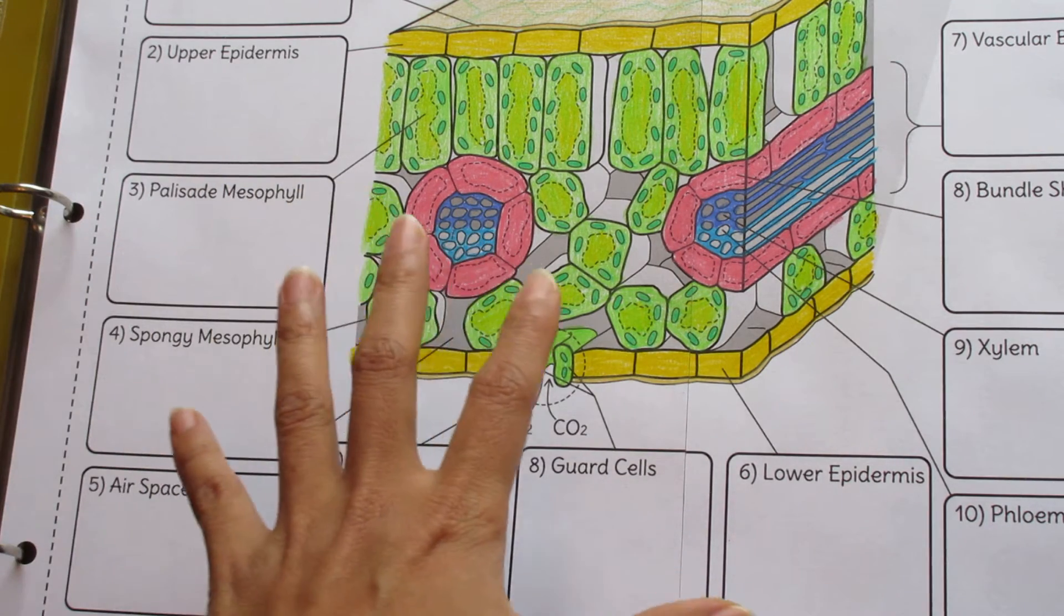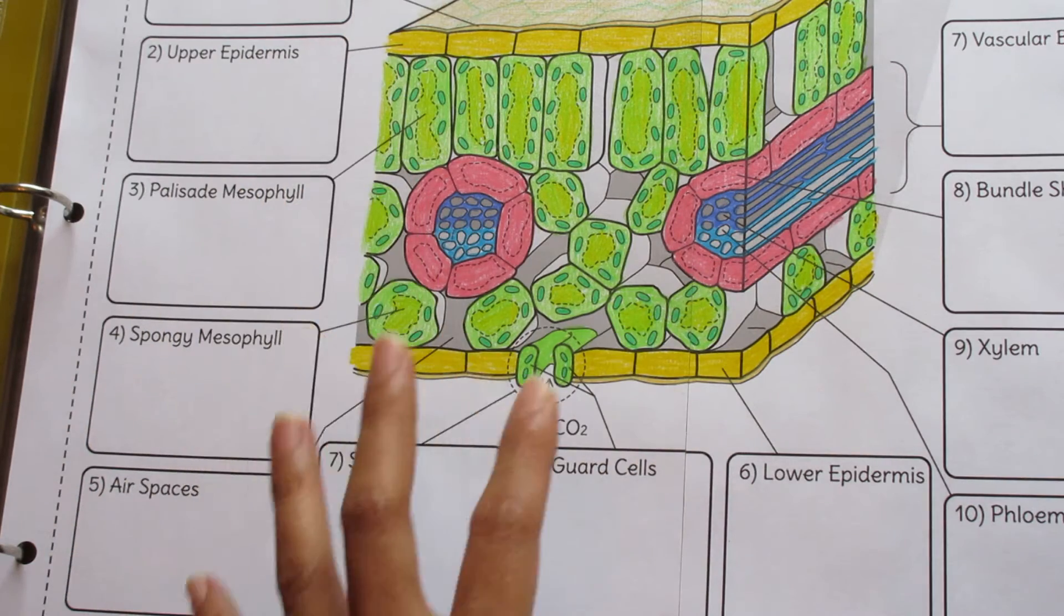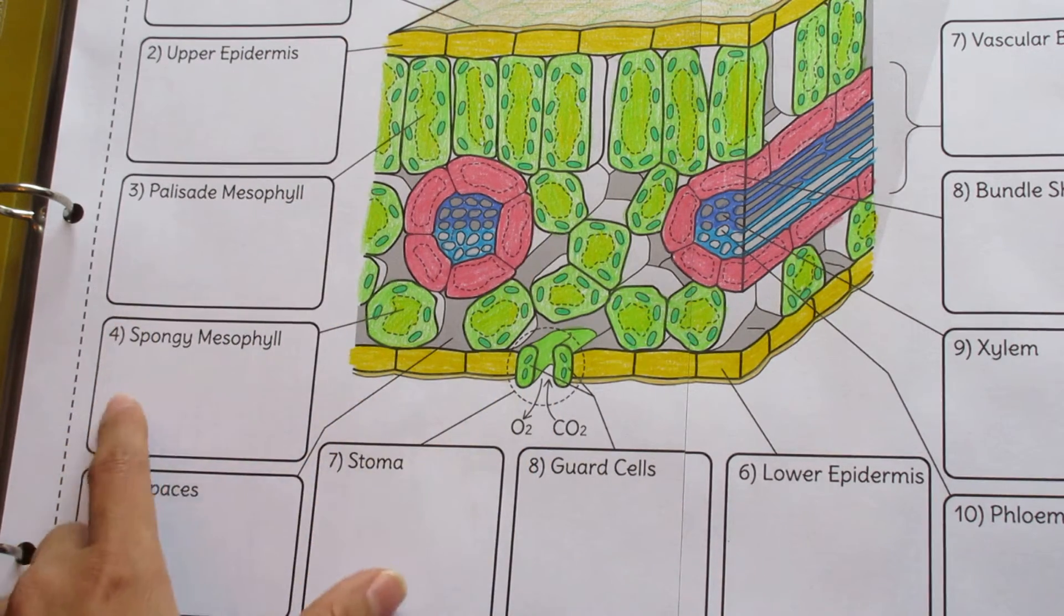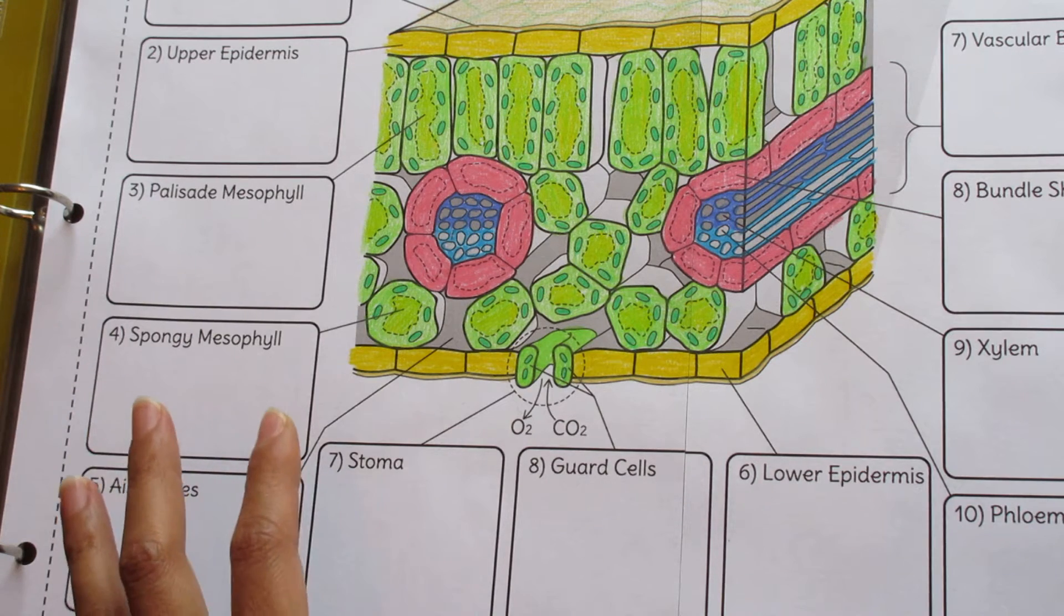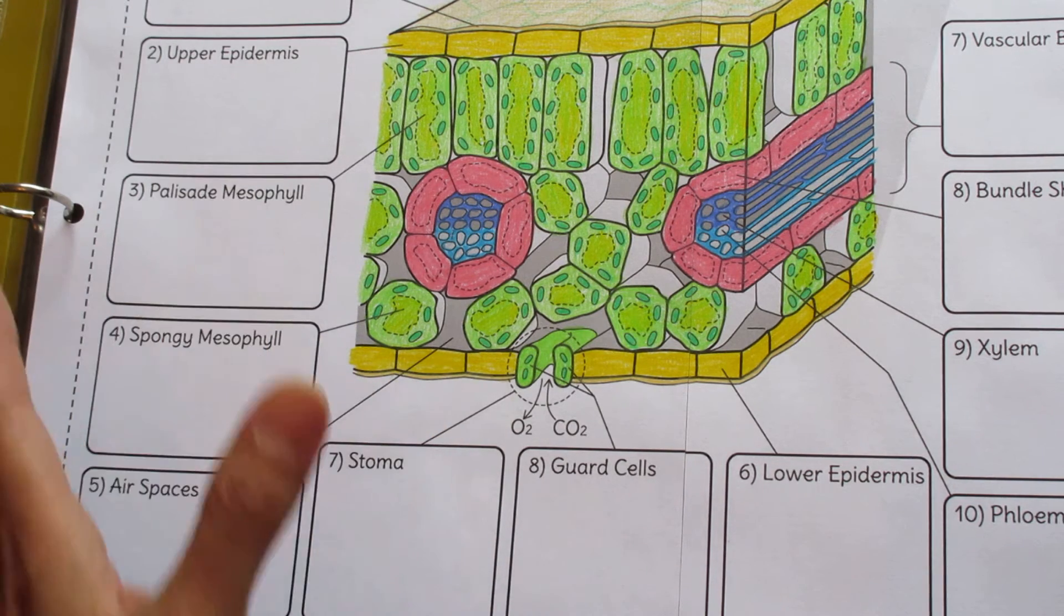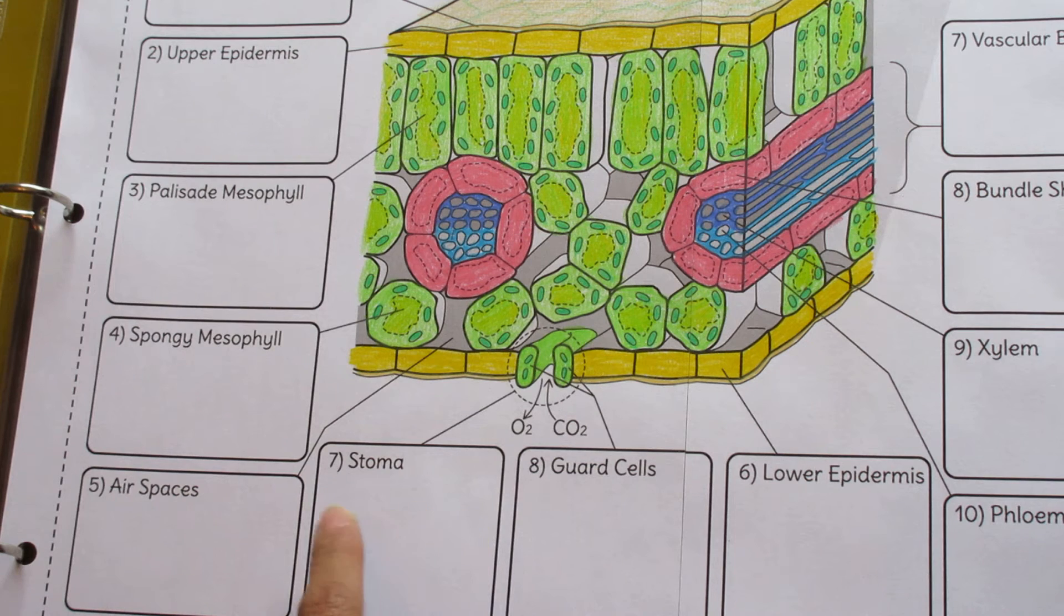Another one of the options I provide looks very similar to this but the labels are replaced by blanks. So this is for more advanced students for whom you might want to ask questions like, does anyone know the name for structure number seven? This will allow for more participation.